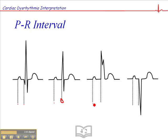Here we don't have a Q wave but we have a QS-type QRS, so we're measuring at the beginning of that QRS. And here we have no R wave but just simply a Q wave alone, so again we measure the beginning of the P wave to the onset of the QRS complex.